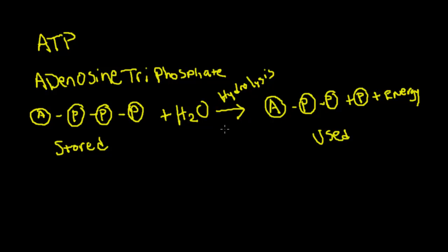This process can go back and forth. If we want to get energy, we have to break that phosphate off using hydrolysis, and that's going to release energy that we can use for work. It's also going to produce heat in the body, and that's going to leave us with ADP, adenosine diphosphate. We have two phosphates there.